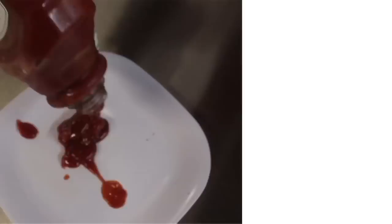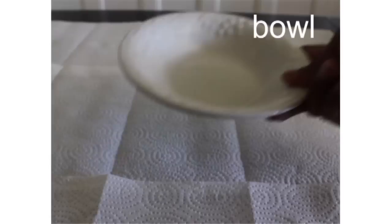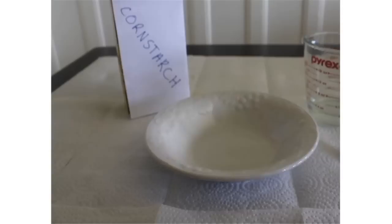And now we're going to show you how to make your very own non-Newtonian fluid at home. It's easy. You'll need a bowl, some cornstarch, water, and something to mix everything along, along with a small measuring cup.